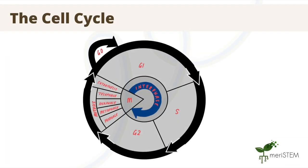Here is what the six phases look like. Note that the largest phase is the interphase, which is split into a G1, an S, and a G2 phase. Mitosis then occurs, which includes the prophase, metaphase, anaphase, and telophase, followed by cytokinesis, which marks the end of mitosis.